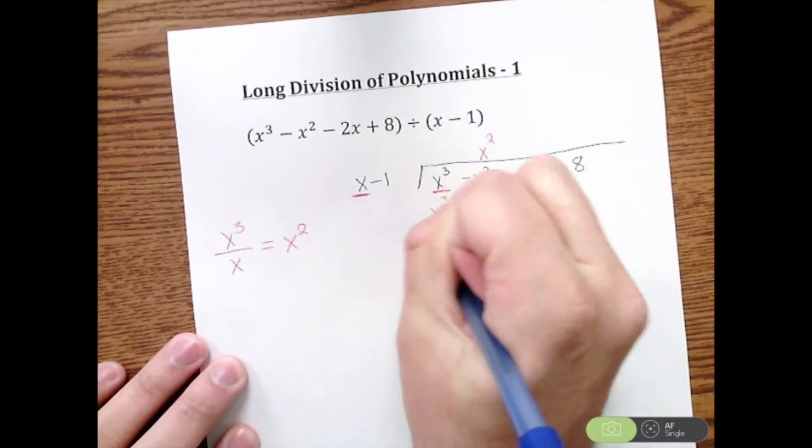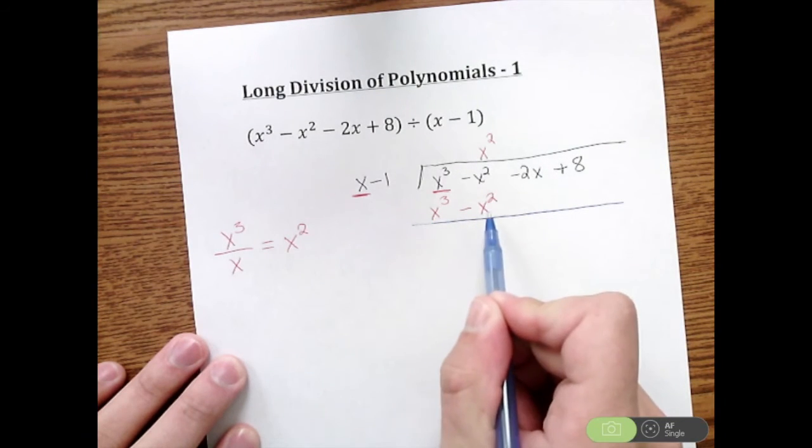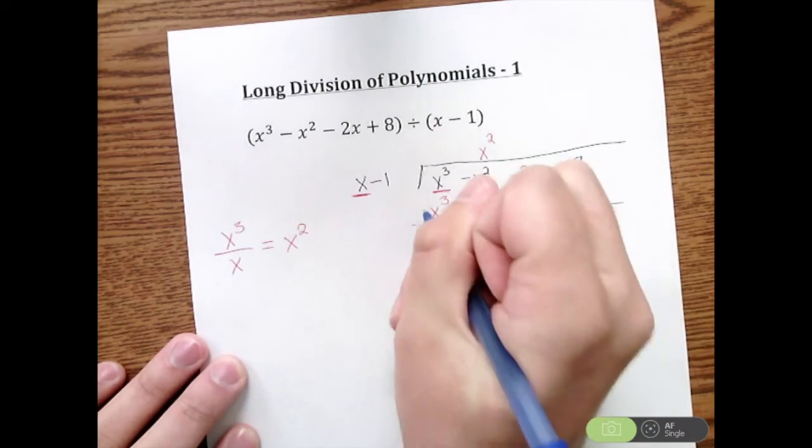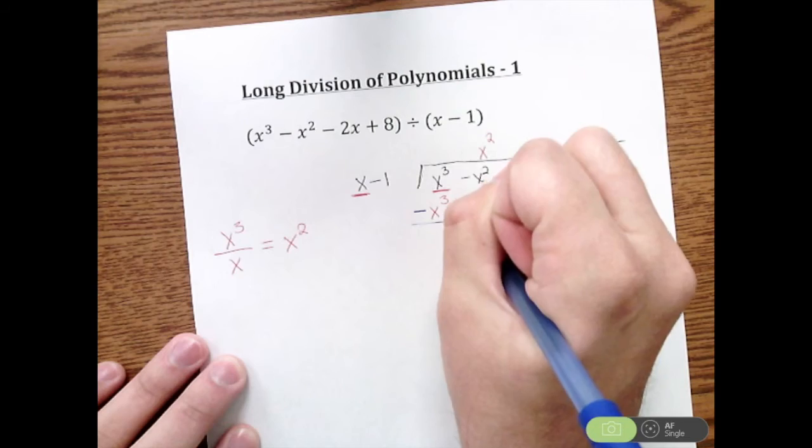Next step, what we're going to do is we're going to subtract off everything we just wrote. So everything that's a positive is now going to be negative. Negatives are now positive. So we're going to subtract off an X cubed and that negative there for the X squared becomes positive.